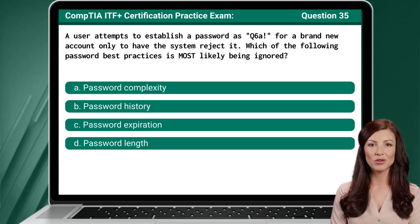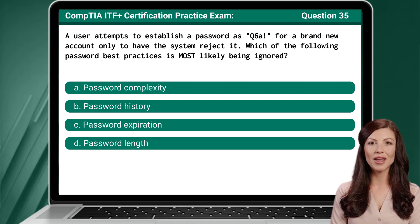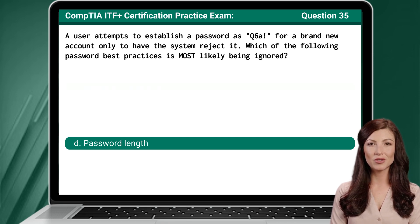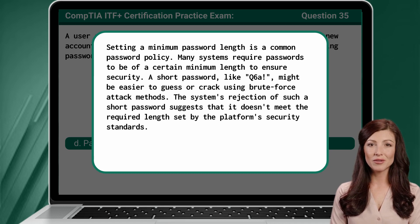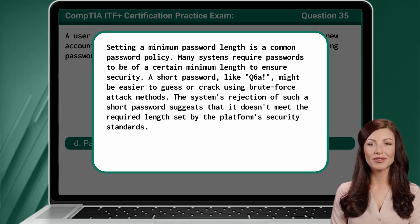Question 35. A user attempts to establish a password as capital Q, 6, lowercase a, exclamation point for a brand new account, only to have the system reject it. Which of the following password best practices is most likely being ignored? The answer is D: Password length. Setting a minimum password length is a common password policy. Many systems require passwords to be of a certain minimum length to ensure security. A short password like that might be easier to guess or crack using brute-force attack methods. The system's rejection of such a short password suggests that it doesn't meet the required length set by the platform's security standards.